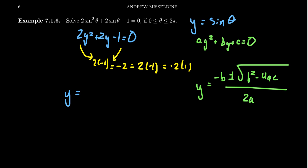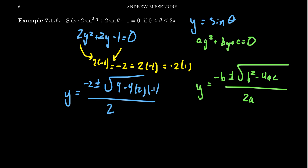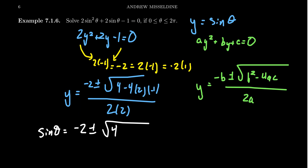So y = [−2 ± √(2² − 4·2·(−1))] / (2·2). Since y = sin(θ), we get sin(θ) = [−2 ± √(4 − 4·2·(−1))] / 4. Let's simplify the discriminant: 4 − 4·2·(−1) = 4 + 8 = 12. So the denominator is 4, and we get sin(θ) = [−2 ± √12] / 4.